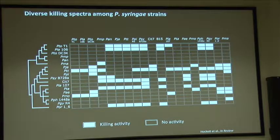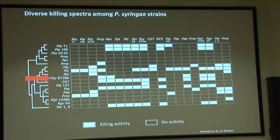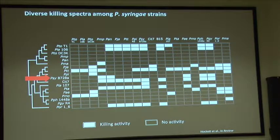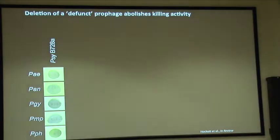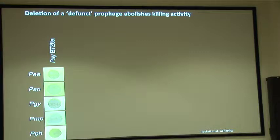There was a diversity of killing spectra across the 18 or so strains I was working with. I was interested in pursuing the genetic basis within one strain that's been a heavy workhorse in this field for about the past 30 years, which I'll just refer to as B728A. It had a number of predicted bacteriocin or colicin-like bacteriocins within its genome, but after deleting all of those, I found there was actually no loss of killing activity from this strain.